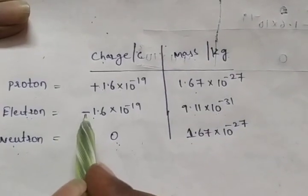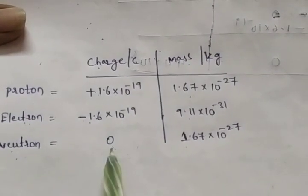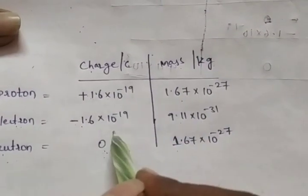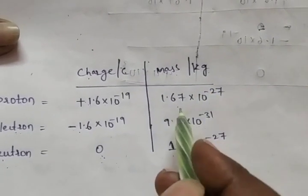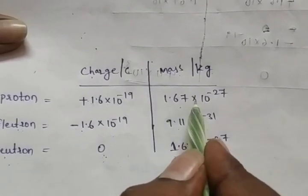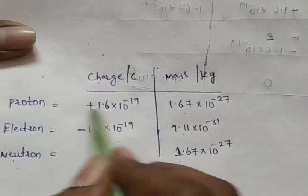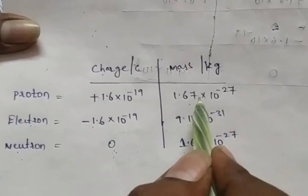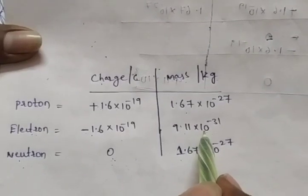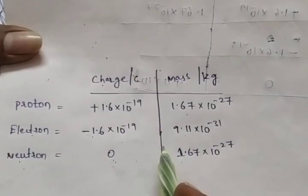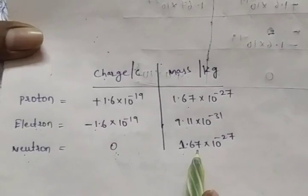Electron has a negative charge: minus 1.6 into 10 to the power of minus 19 Coulombs. Neutron has no charge. Mass units are kilograms. Proton mass is 1.67 into 10 to the power of minus 27 kg, electron mass is 9.11 into 10 to the power of minus 31 kg, and neutron mass is 1.67 into 10 to the power of minus 27 kg.